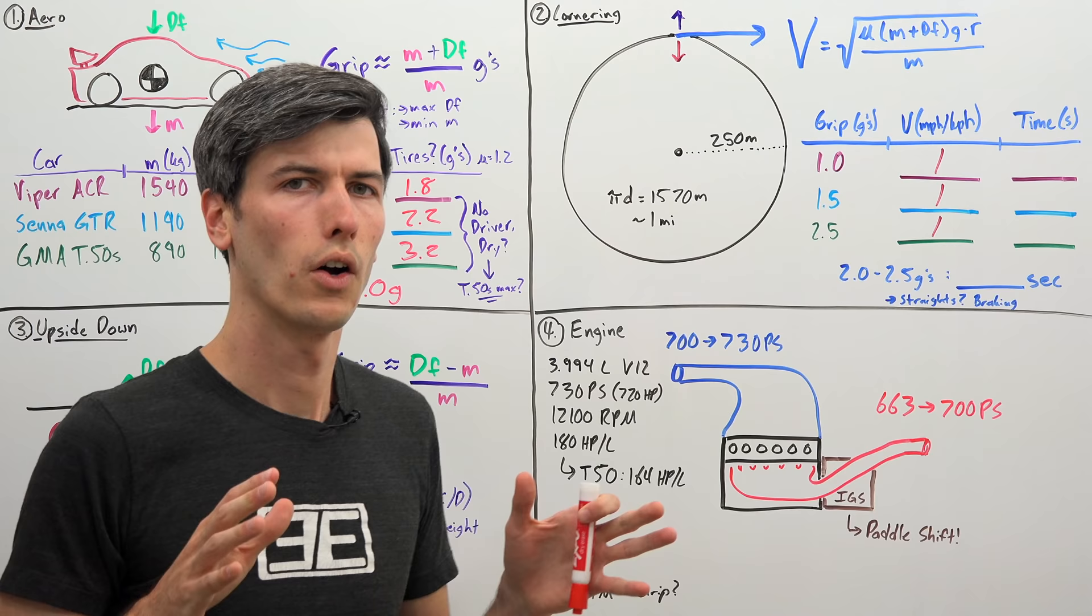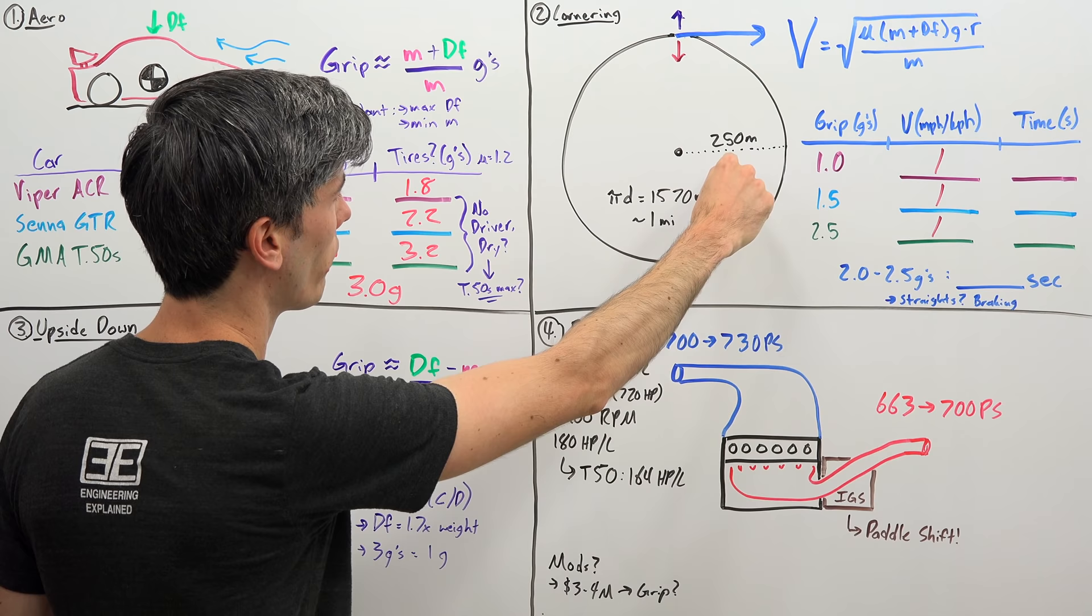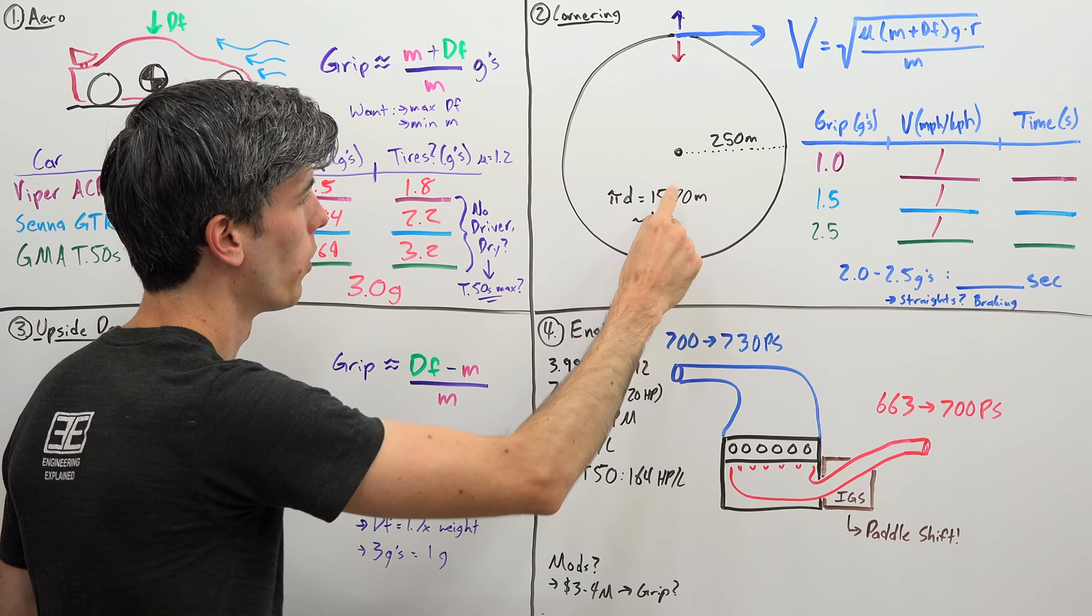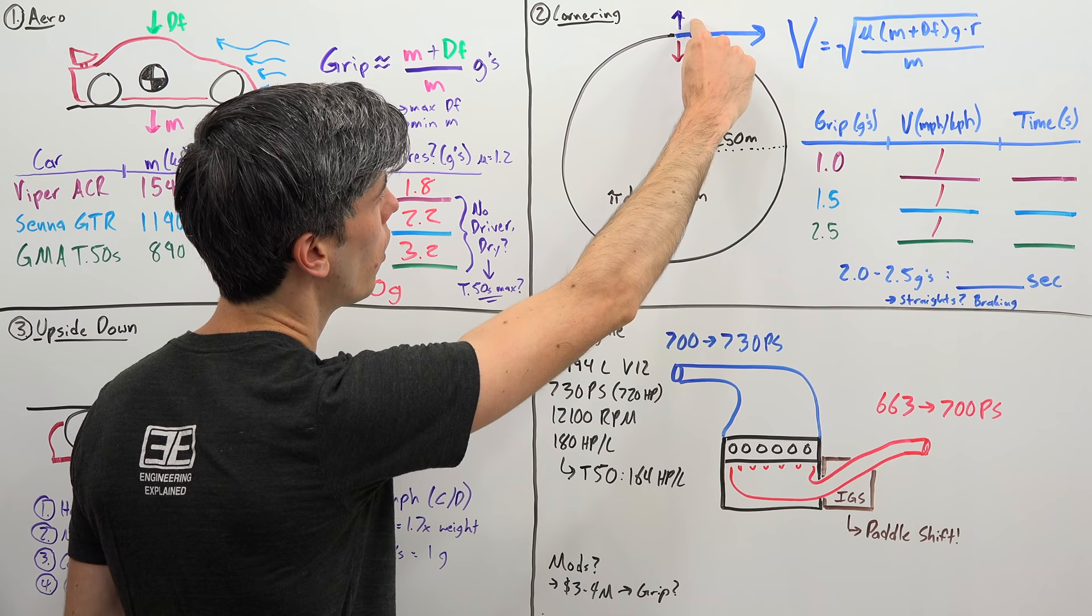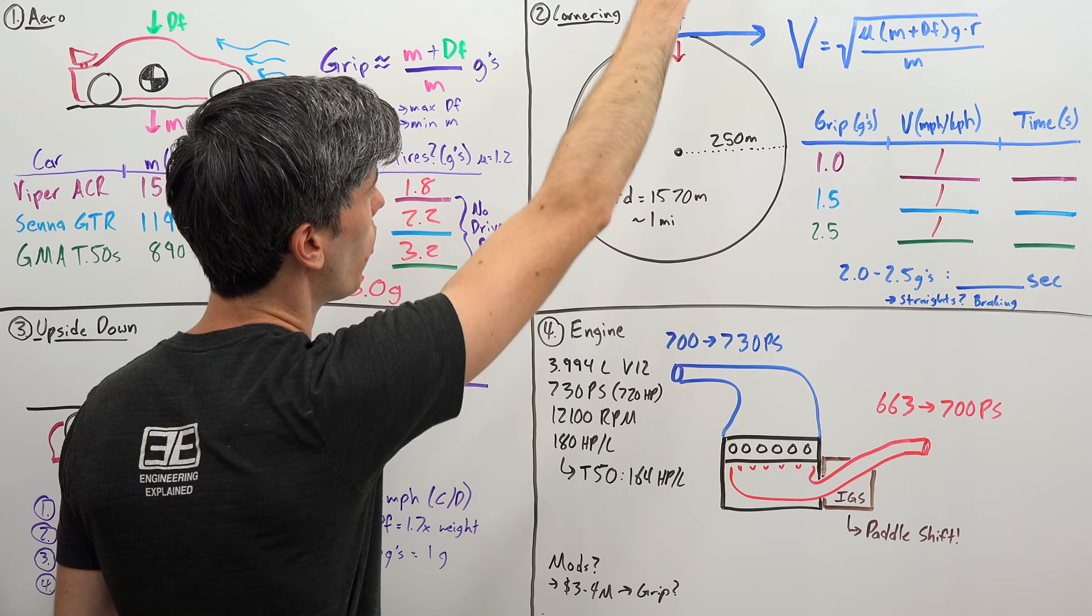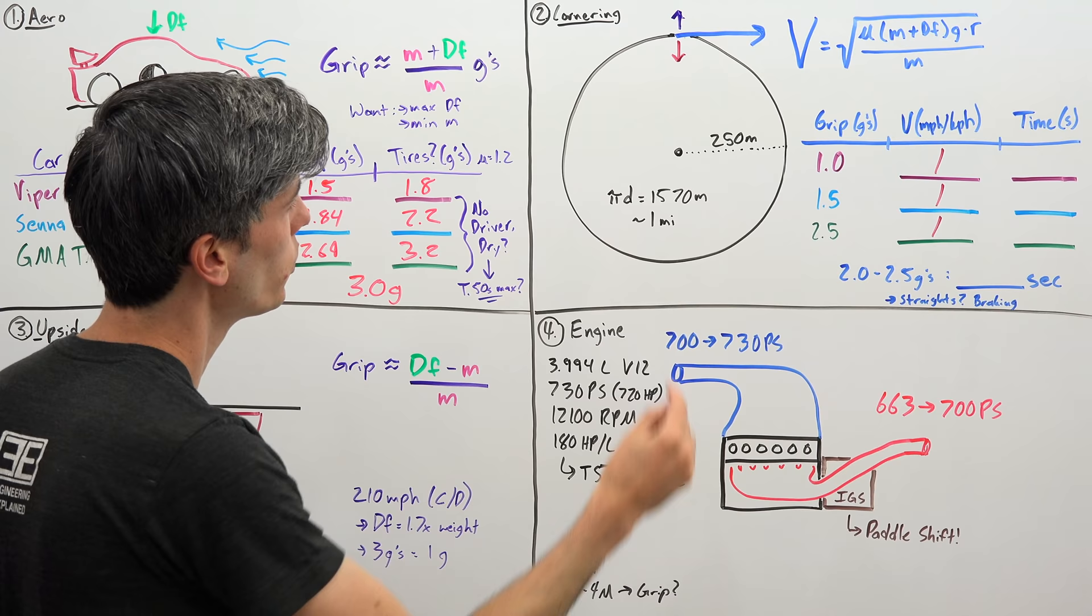So how does this translate to track time? Let's just take a very simple example and say we're going around in a circle. We have a 250 meter radius circle which gives us a total circumference of about 1,570 meters or about 1 mile. Your car is turning, and as it's turning the acceleration force makes it want to go away from that circle, but the tires are gripping to that road giving you a force resisting that outward acceleration.